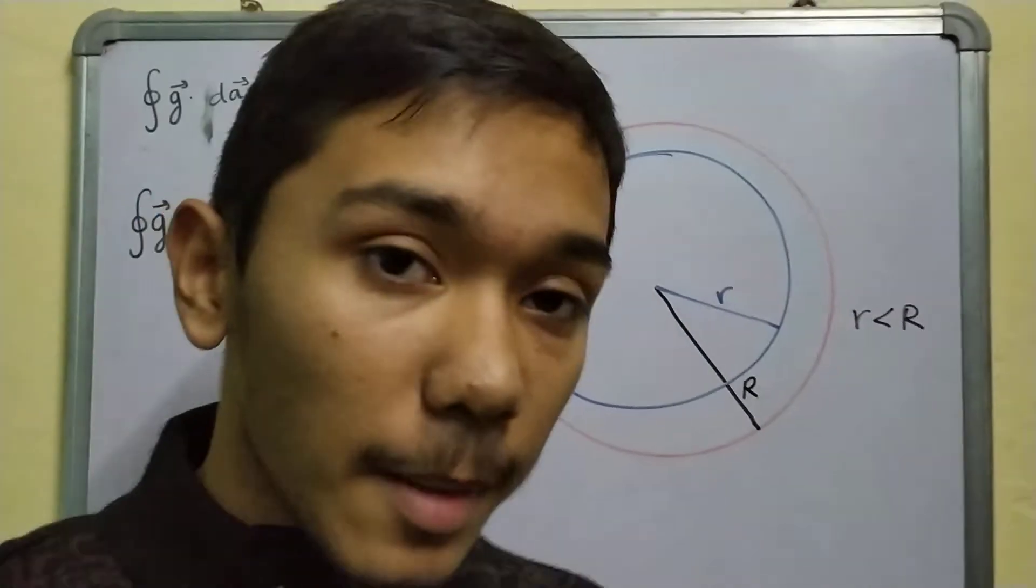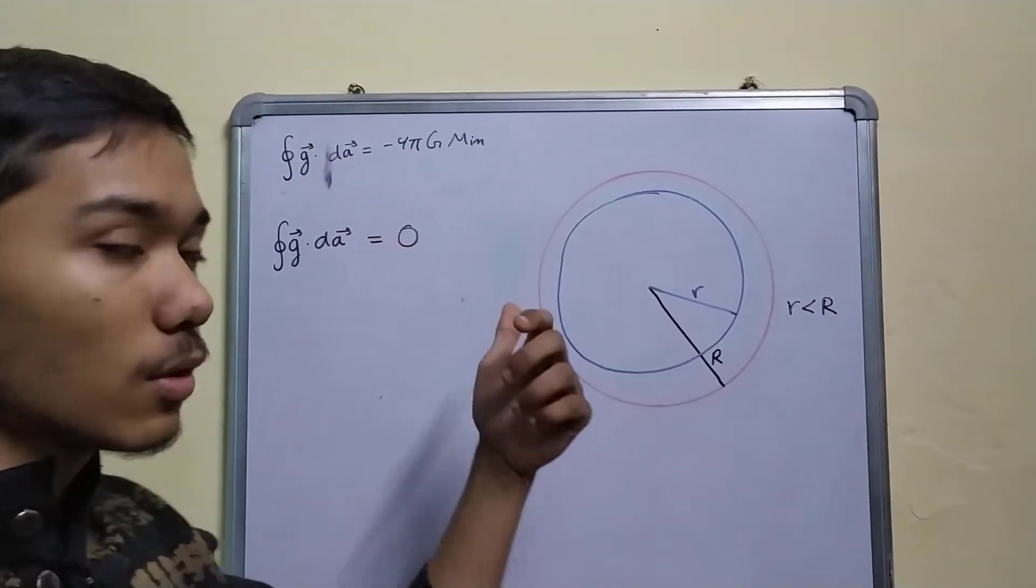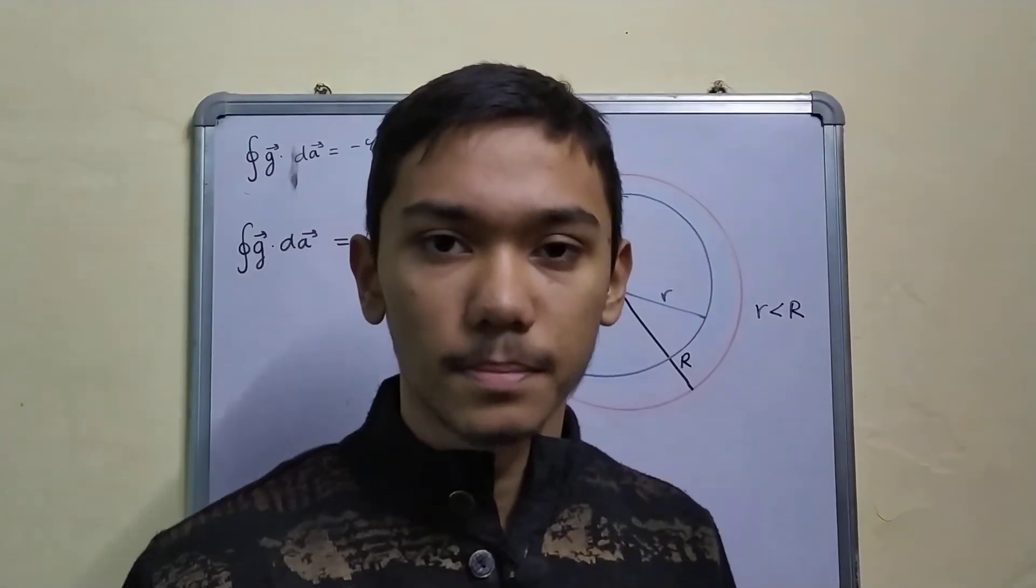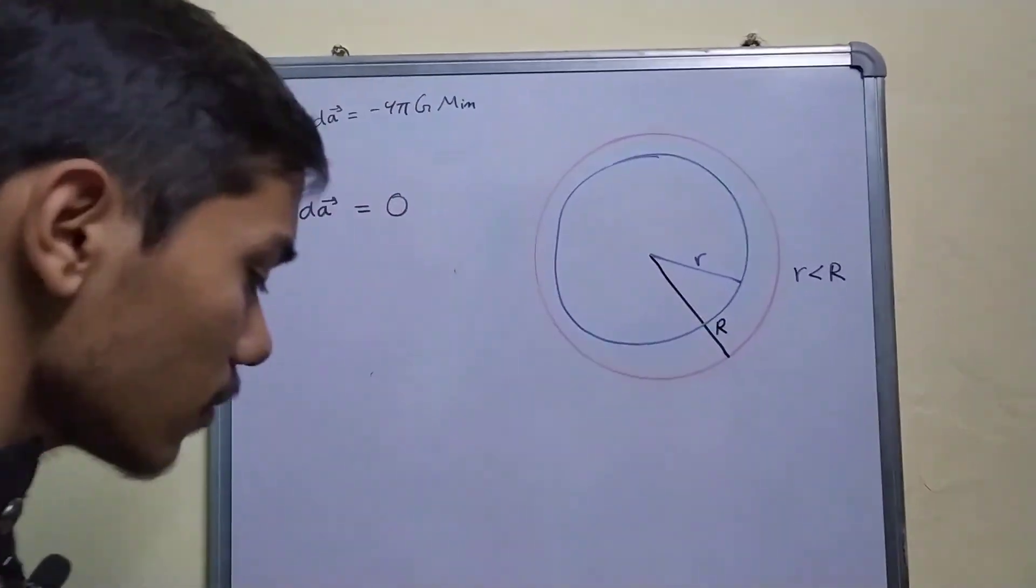Now, you might be tempted to say that, since g dot dA is 0, this means that g is 0. That is actually not the correct reasoning.